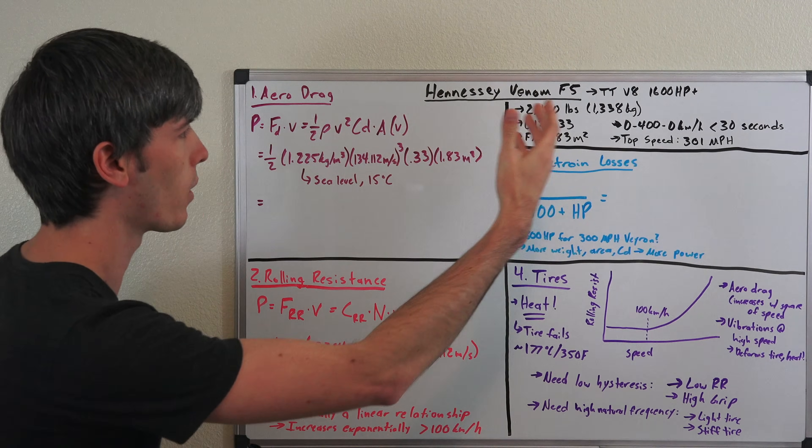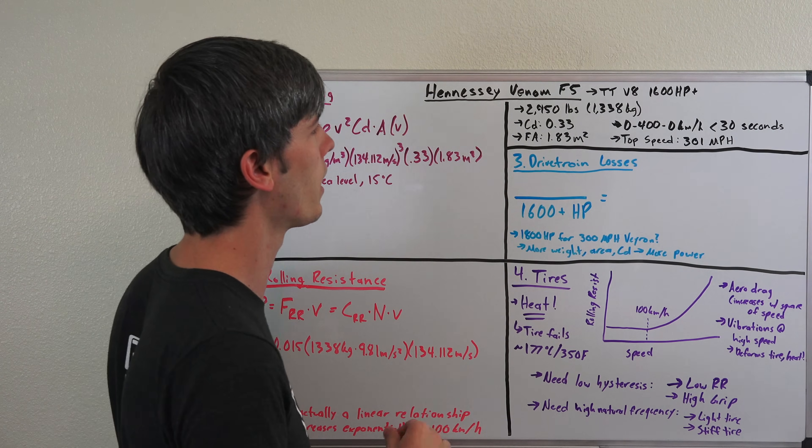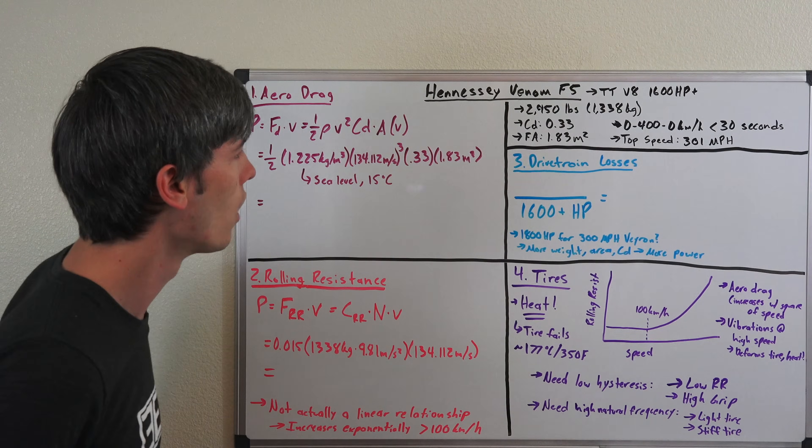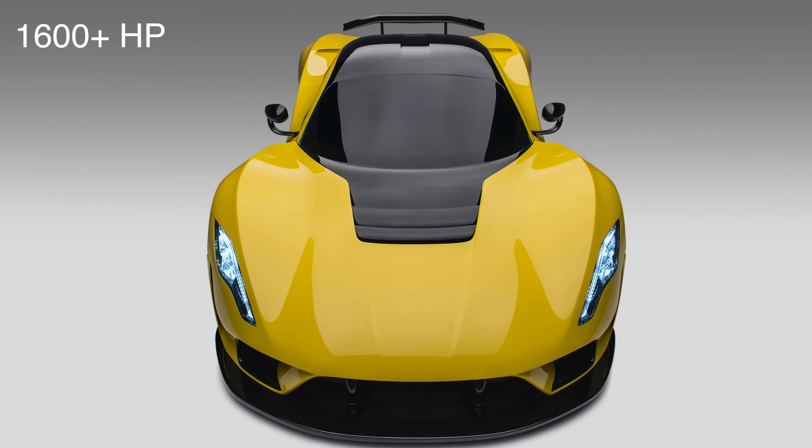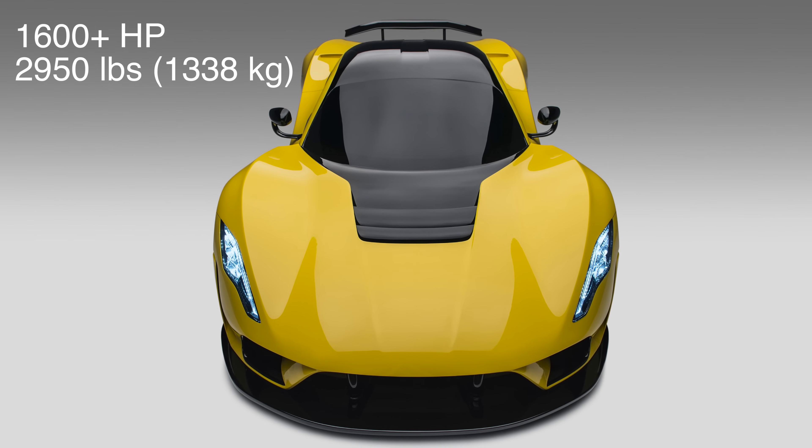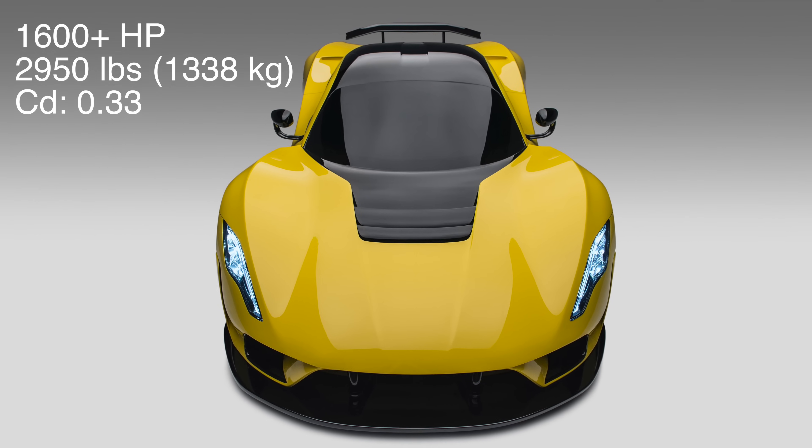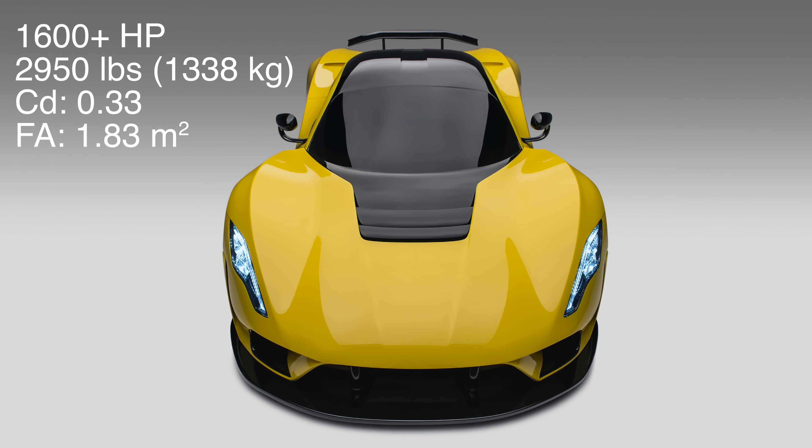From that we can see whether or not its twin-turbo V8 producing 1600 horsepower plus is enough to propel this vehicle all the way to 300 miles per hour. Some other specifications: the car weighs 2,950 pounds or about 1,338 kilograms.